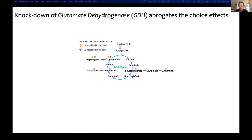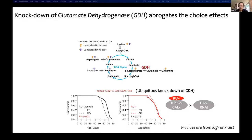For example, alpha-ketoglutarate and its precursor glutamate and glutamine are both increased in the head. We further investigated the role of biochemical reactions producing these TCA metabolites. We targeted knockdown of glutamate dehydrogenase (GDH), which converts glutamate to alpha-ketoglutarate. Using an RU486-dependent gene switch system to knock down GDH ubiquitously, controls without RU are short-lived on the choice diet just as wild-type flies, but when the RNAi is activated by RU, the lifespan differences between the two environments are abrogated. This data suggests a causal link between alpha-ketoglutarate and the choice lifespan effect.